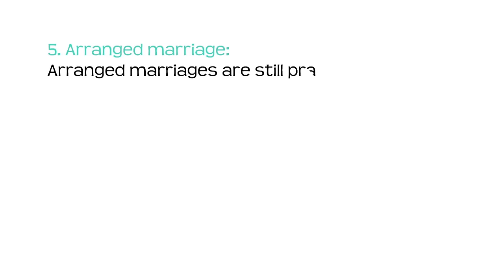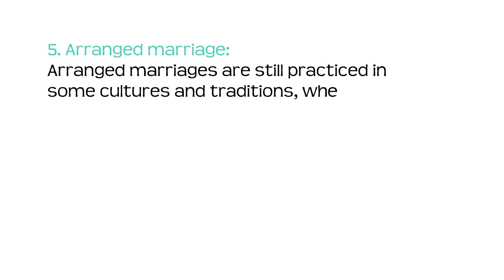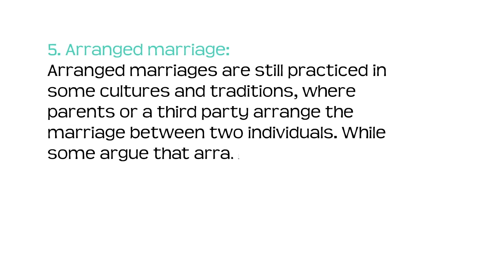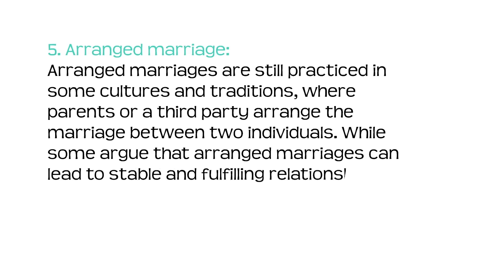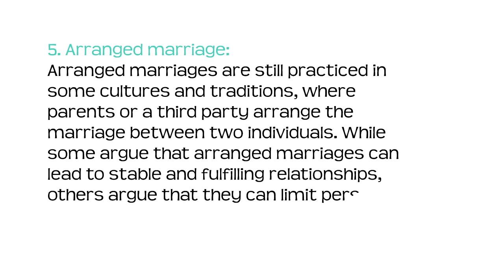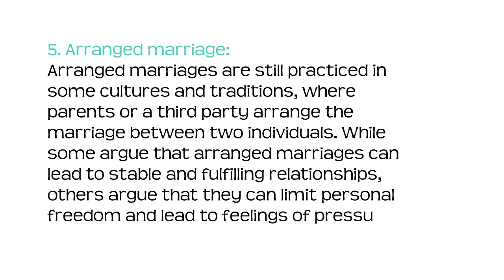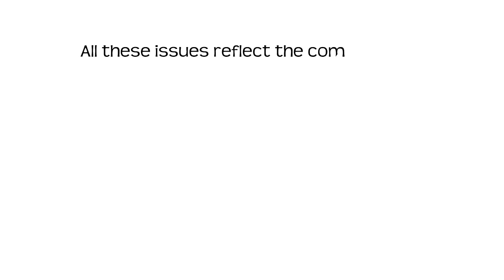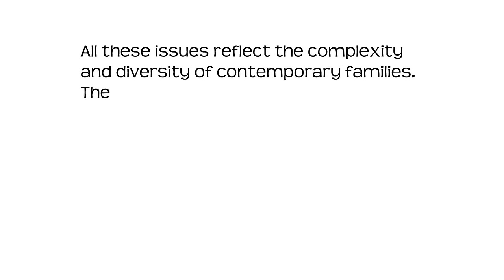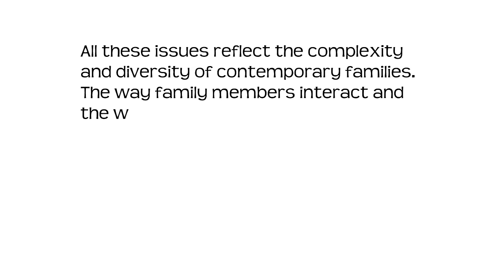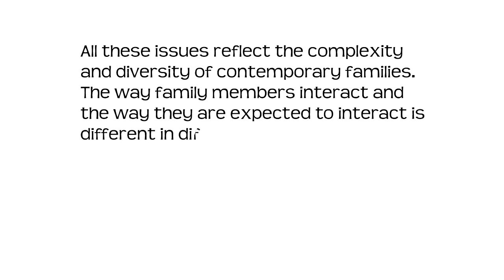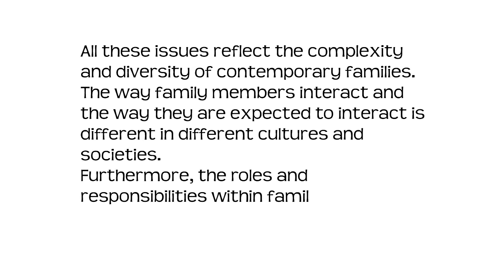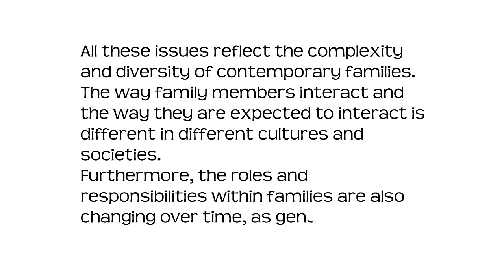Number five: arranged marriage. Arranged marriages are still practiced in some cultures and traditions, where parents or a third party arrange the marriage between two individuals. While some argue that arranged marriages can lead to stable and fulfilling relationships, others argue that they can limit personal freedom and lead to feelings of pressure and dissatisfaction. All these issues reflect the complexity and diversity of contemporary families. The way family members interact and the way they are expected to interact is different in different cultures and societies. Furthermore, the roles and responsibilities within families are also changing over time as gender roles and social norms evolve.